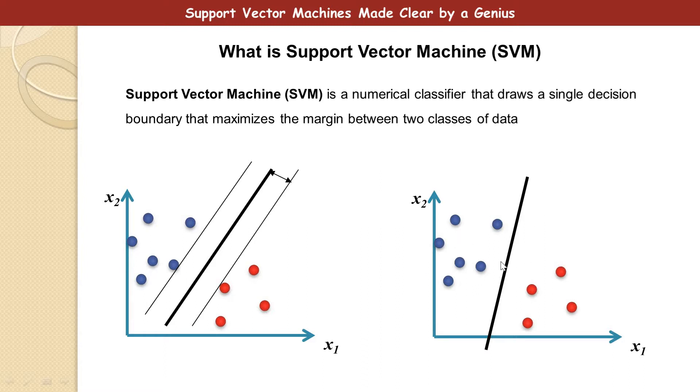For instance, this figure by the right, we have a line that classifies, divide it correctly. But in this case, it doesn't follow Support Vector Machines principles. It's not a Support Vector Machine because you can see that it's not actually in the midpoint.